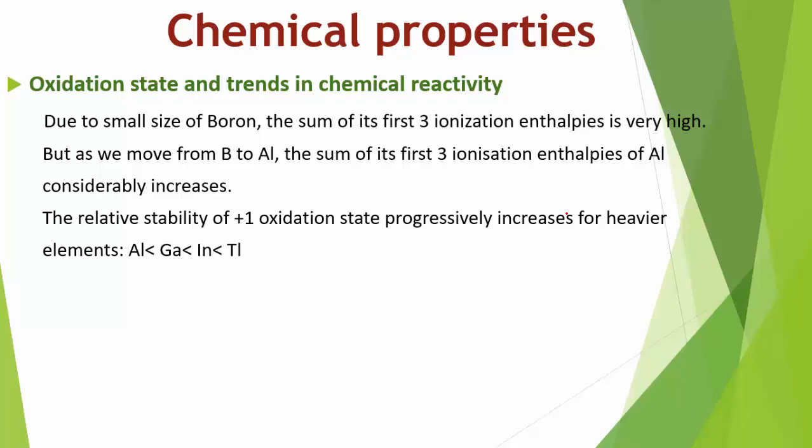In chemical properties, the most important aspect is oxidation state and trends in chemical reactivity. Boron's small size gives it very high first three ionization enthalpies, preventing it from forming +3 ions and forcing it to form only covalent compounds.